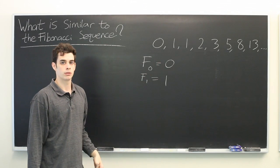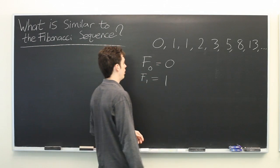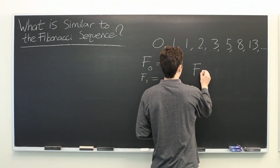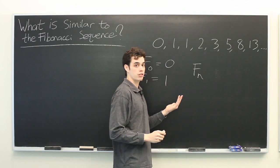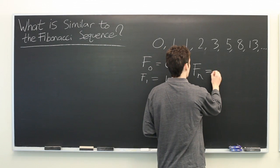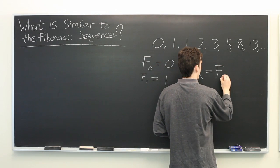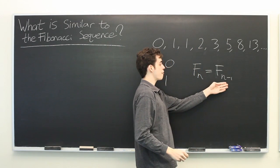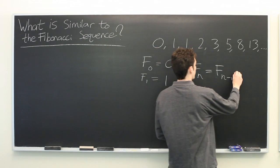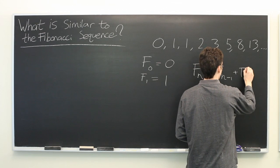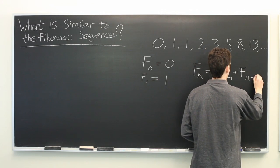And then all the other terms are defined recursively. Fn, the nth term in our sequence, is simply given by adding the previous term, Fn-1, with the one before that, Fn-2.